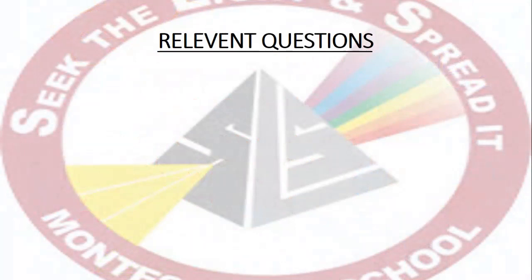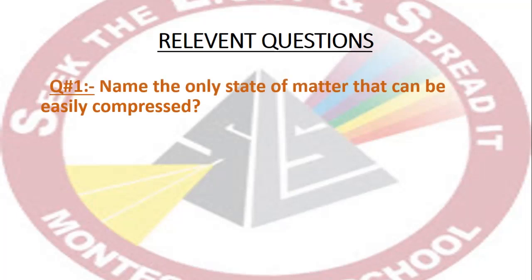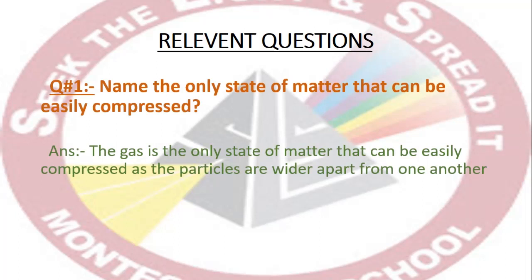Come to page 116 for the relevant questions. There are two questions: question number 1 and question number 3. Question 1 is: name the only state of matter that can be easily compressed. The answer is: gas is the only state of matter that can be easily compressed, as the particles are wider apart from one another.